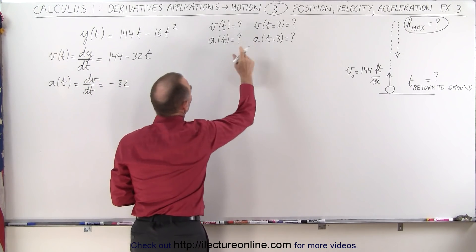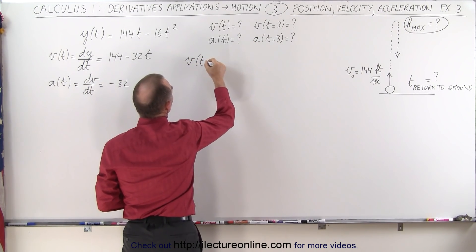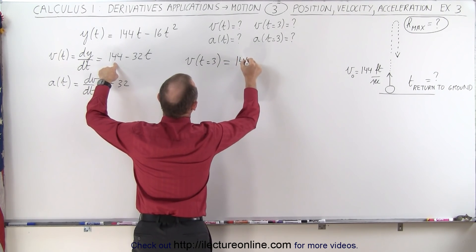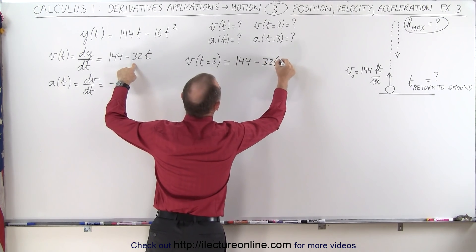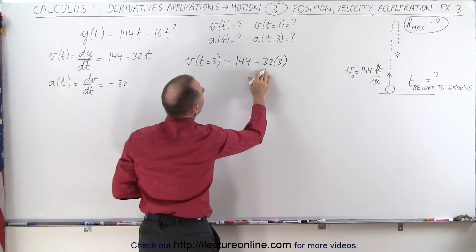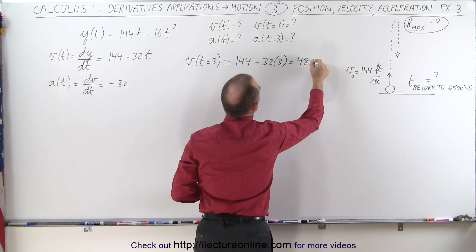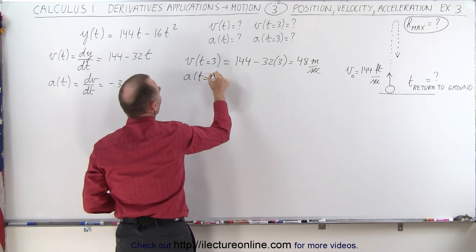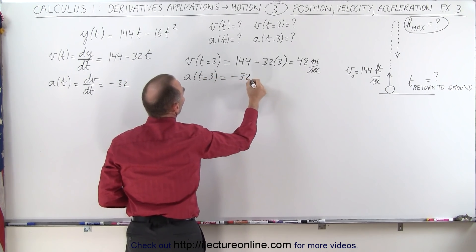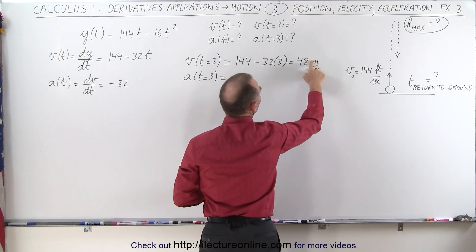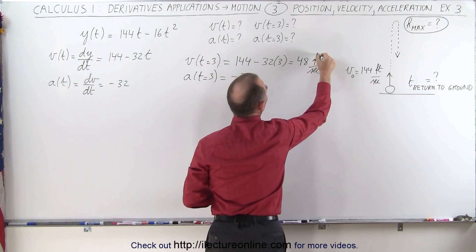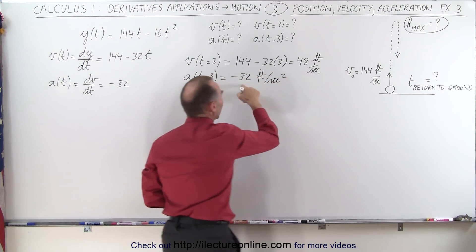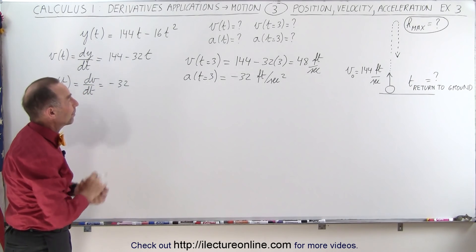Evaluating these two functions at t equals 3 seconds: velocity at t=3 equals 144 minus 32 times 3, which is 144 minus 96, giving us 48 feet per second. The acceleration at t equals 3 is minus 32 feet per second squared. Notice the acceleration is constant, so it does not depend on time.